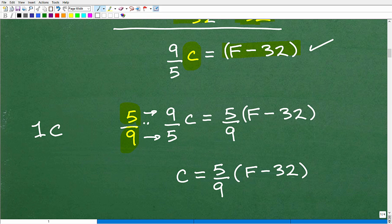So if I multiply this side of the equation by 5 over 9, well, I've got to multiply the other side of the equation by 5 over 9. Remember that rule in algebra. Whatever you do to one side of the equation, it's okay. You can do whatever you want to do as long as you do it equally to the other side of the equation.